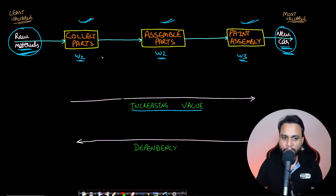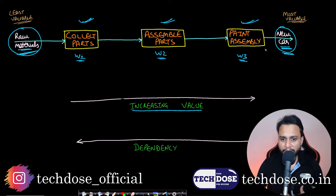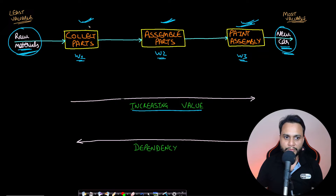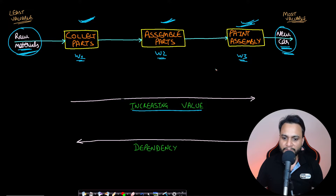So value increases as we go from left to right — from acquiring the raw materials to getting the new car. But in terms of dependency, you cannot paint something for which the structure has not been generated, and you cannot make the structure if you don't have the relevant parts, and you cannot collect the parts if you don't have the raw materials. So the dependency is in the opposite order of value.